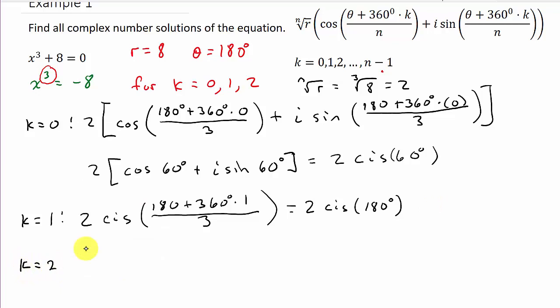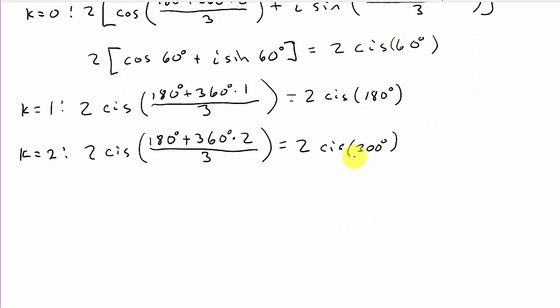Okay, so k equals 2. So for k equals 2, that's going to be this here, which is 2, and then I'll use the CIS. That's 180 plus 360 times 2 over 3, which equals 2. And then let's see, 180 plus, what is that, 720, and then divide that by 3, and that's going to give us 300 degrees. So let's come down here and write these.